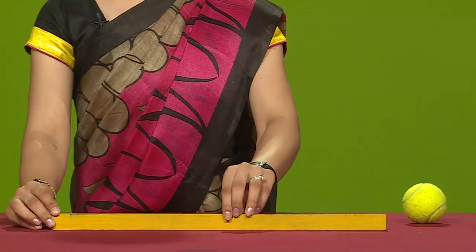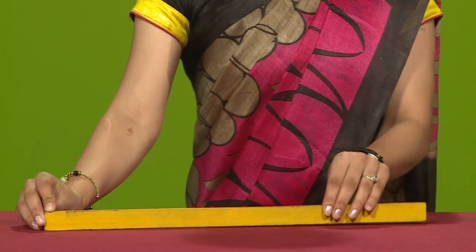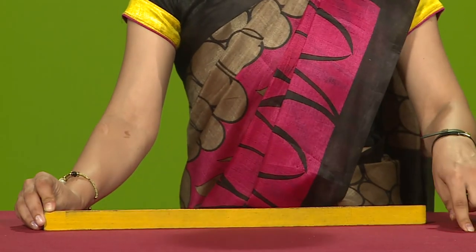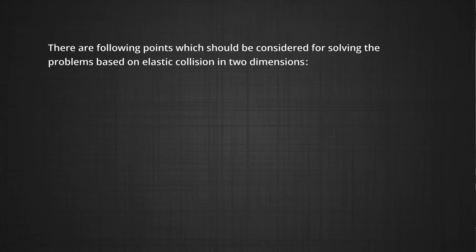Here are two balls. One is initially at rest, and when I hit this ball with the other one, they go in different directions. Suppose this is the original line of motion. So this ball turns to one side from the original line of motion and the other one turns to the other side. There are following points which should be considered for solving the problems based on elastic collision in two dimensions.